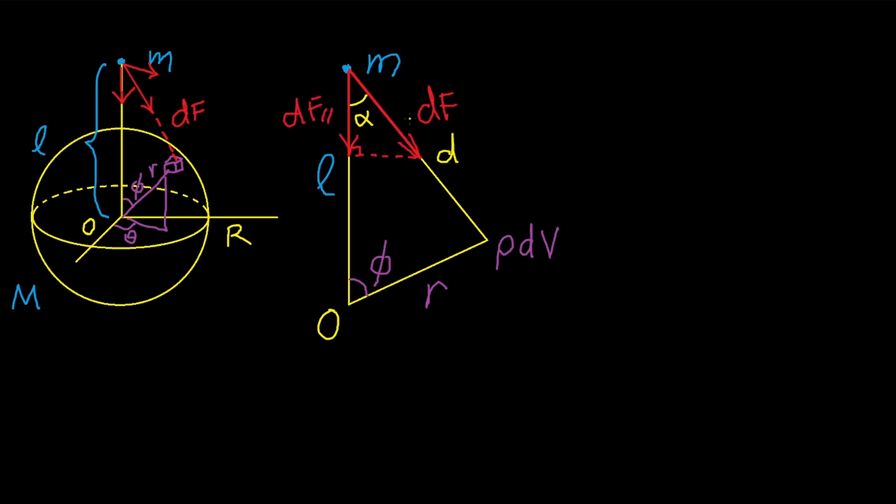As argued, we would like to express the radial component of the force dF, denoted as dF parallel. The first one is the magnitude of dF, given by the inverse square law. Here ρ denotes the mass density of the spherical body, so the volume element has mass ρ times dV.